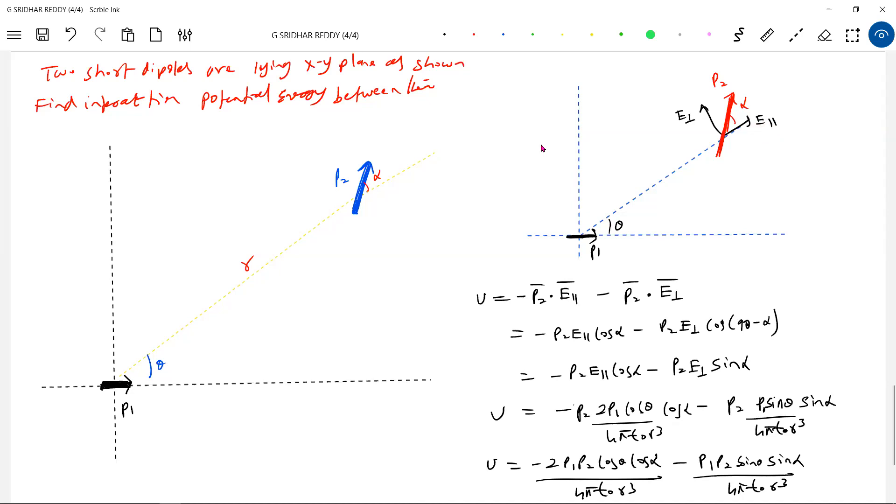Can we calculate force of interaction by differentiating this? We'll get magnitude, not direction. Due to component P2cosα and this component, we'll get x component of force. Due to this, we'll get perpendicular component of force. Take the resultant and you'll get force in some direction. This may not be very important; none of the books have it, but I asked you.